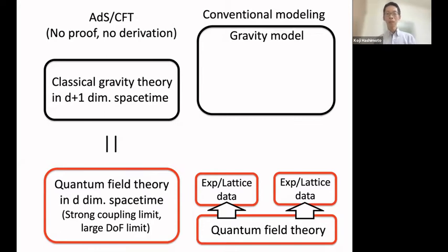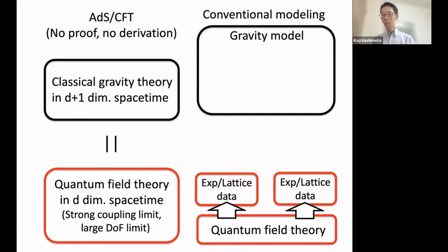QCD allows many interesting gravity modelings. In conventional holographic QCD modeling, one starts with a favorite quantum field theory like QCD, solves it by numerical simulations or experiments to prepare data, and then tries to understand what hidden description underlies the data. The gravity model, via ADS/CFT, helps with this. A holographic QCD researcher must write down a gravity theory or Lagrangian one dimension higher than the original quantum field theory — the holographic principle.